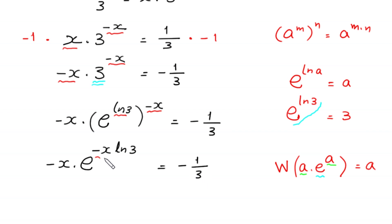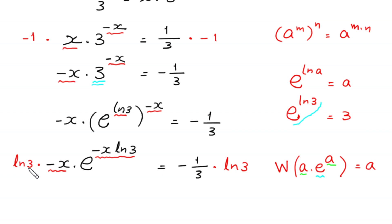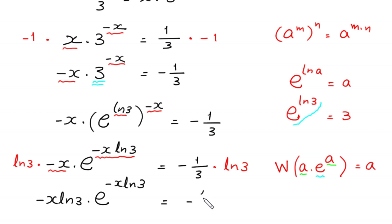Now here we have negative x times ln of 3 and here we have only negative x. To make this negative x the same as negative x times ln of 3, we multiply both sides of this equation by ln of 3. This gives us: ln of 3 times negative x times ln of 3 times e to the power (negative x times ln of 3) is equal to negative 1 over 3 times ln of 3. We name this the star equation because we can find two solutions from it.